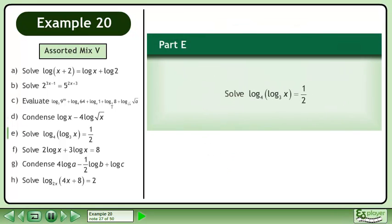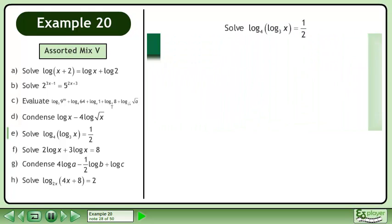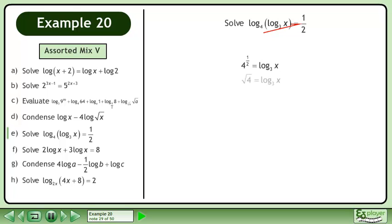In Part E, solve log₄(log₃(x)) = 1/2. Convert to exponential form using the 7 rule. Write the power as a radical. Root 4 equals 2.